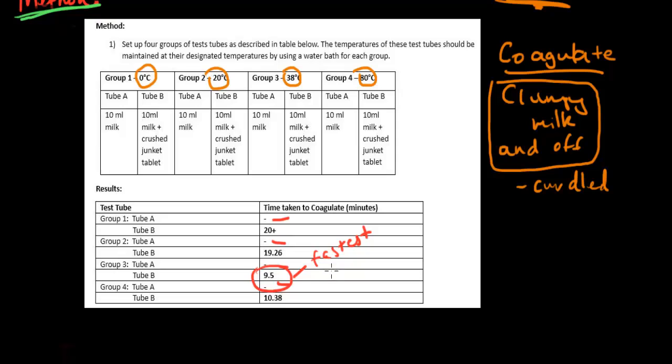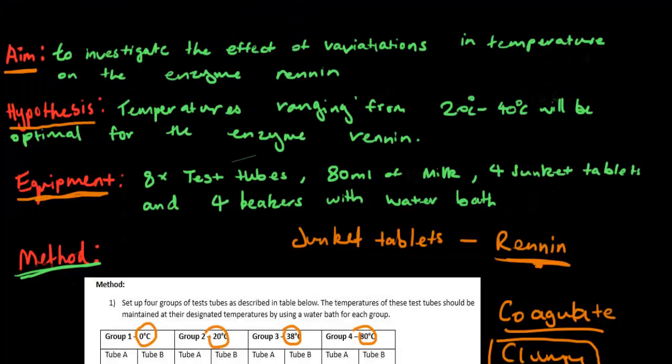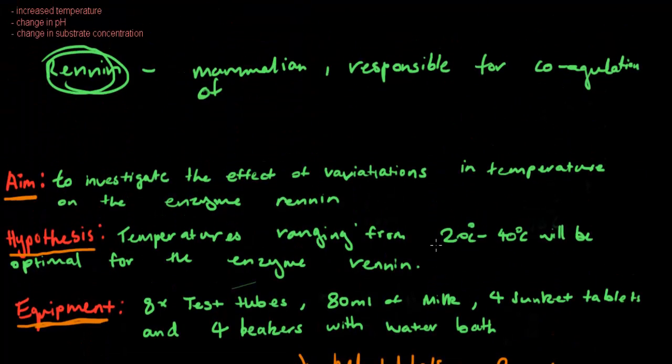At 80 degrees, it took 10 minutes 36 seconds. The best temperature for renin to coagulate milk is 38 degrees Celsius. Was our hypothesis right? Temperatures ranging from 20 to 40 degrees will be optimal—partially correct. 38 degrees Celsius was the optimal temperature.